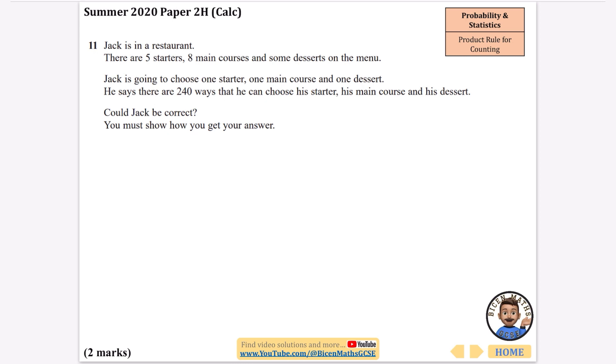Jack is in a restaurant. There are five starters, eight main courses and some desserts on the menu. I'm going to call it N. Jack is going to choose one starter, one main and one dessert. He says there are 240 ways that he can choose his starter, main course and dessert. Could he be correct? So remember we're wanting N to be an integer if he is correct. He thinks if we do 5 times 8 times the number of desserts we get 240.